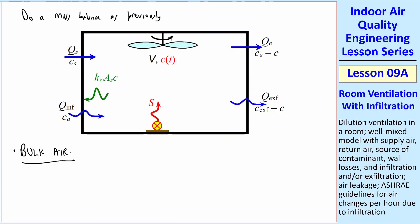For the bulk air, we have conservation of air volume flow rate. We'll assume the densities are pretty much constant, even though the temperatures can be different. So use an average density. So Q_S plus Q infiltration must equal Q_E plus Q exfiltration. We have two sources into the room of bulk air, and we have two sinks out of the room of bulk air.